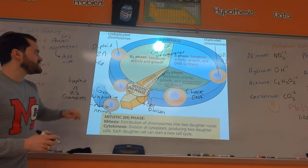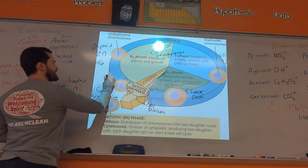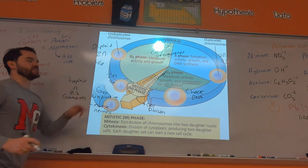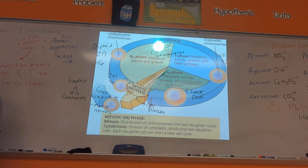Once we do mitosis, we drop back down to that 2N diploid level because you divide up half of the DNA.